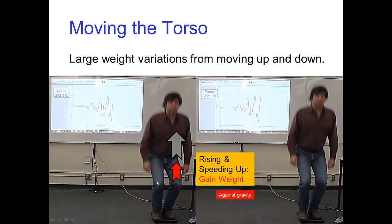If you watch that carefully, you'll see that here I am rising and speeding up. Here's two frames, and if you look back on the graph, my weight is going up — it's already larger than my normal weight of about 180 pounds. I'm rising and speeding up, so I'm up to 242 pounds. And in fact, as I'm speeding up even more, my weight rises to an impressive 322 pounds.